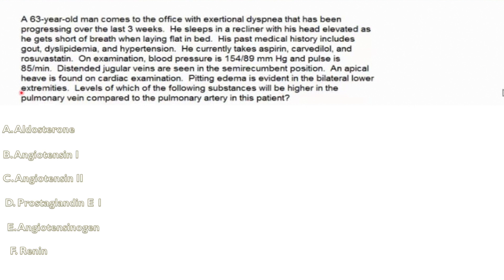Moving on to the next question. Again, reading the last two lines first: pitting edema is evident in bilateral lower extremities. This could be renal, cardiac, or hepatic in origin. The question asks which substance will be higher in the pulmonary vein compared to the pulmonary artery, with several answer choices provided.